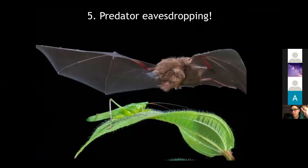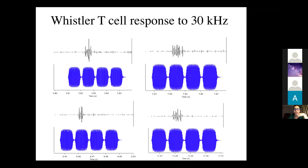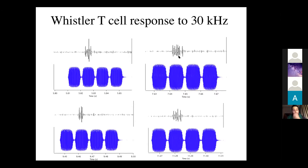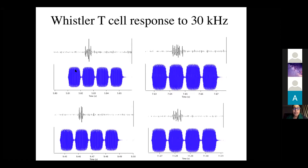Some recordings we did with that setup showed that our cricket — while probably using the anterior tympanic membrane to hear the same-species low-frequency call — was also listening very sharply to predatory high-frequency bat calls. In fact, the largest neuron in the ascending nerve going from the ears through the prothoracic ganglion to the brain seemed to be preferentially tuned to bat calls, as is commonly seen in bush crickets.